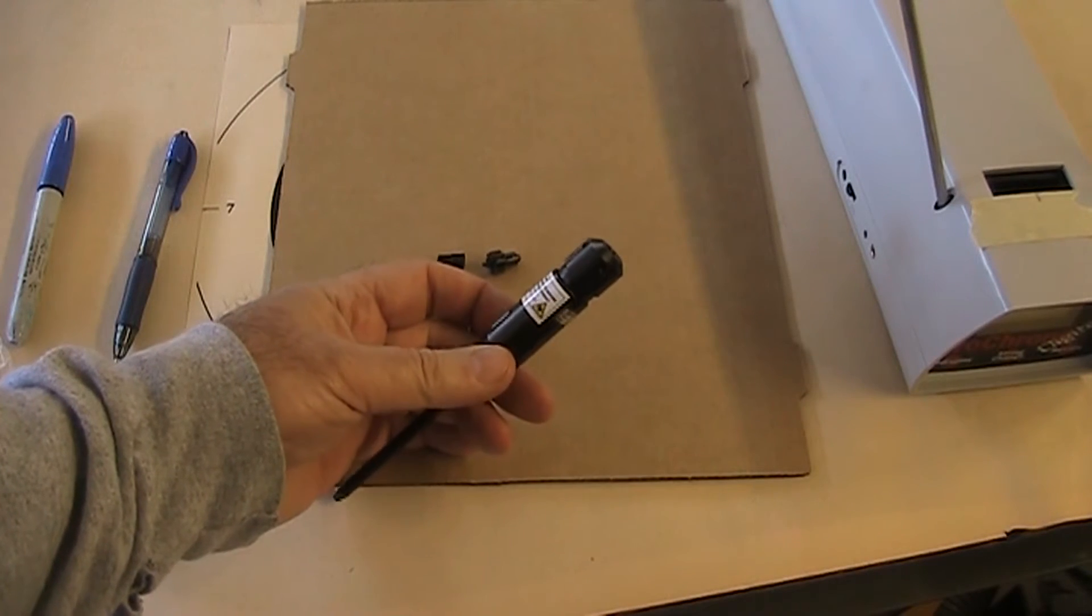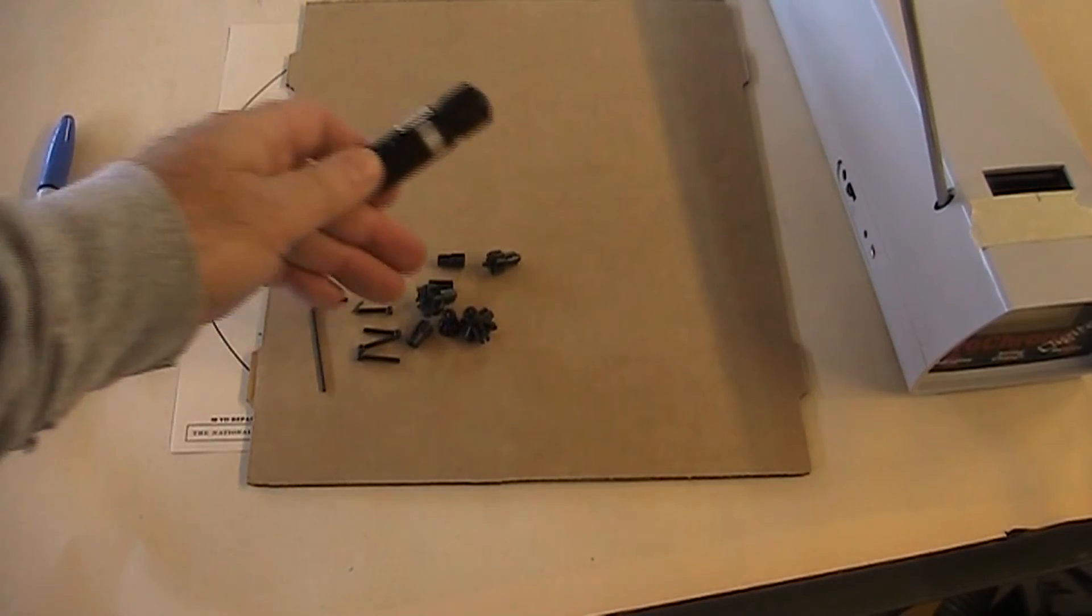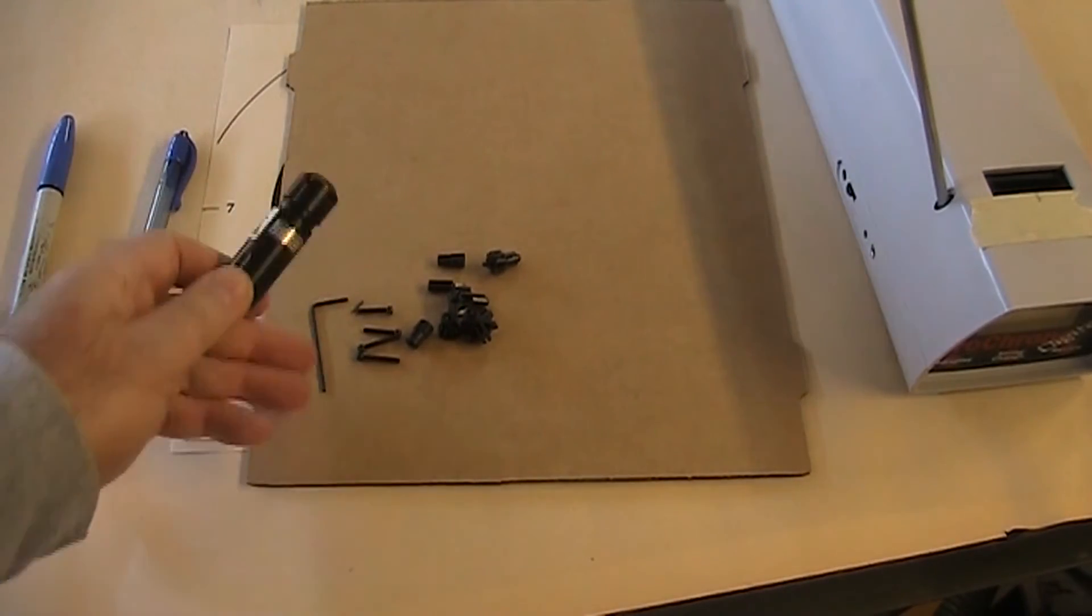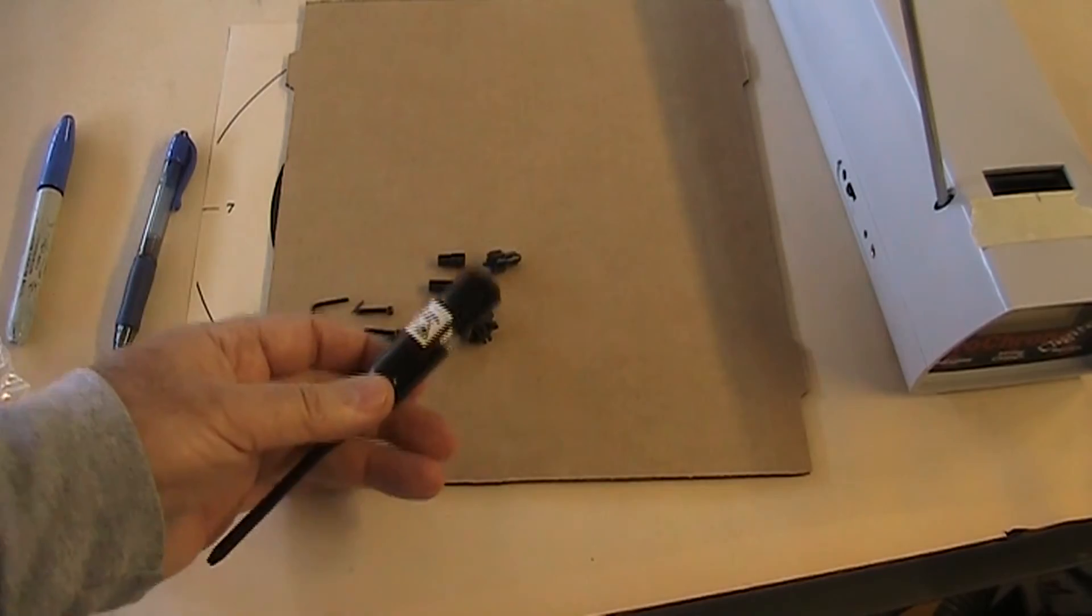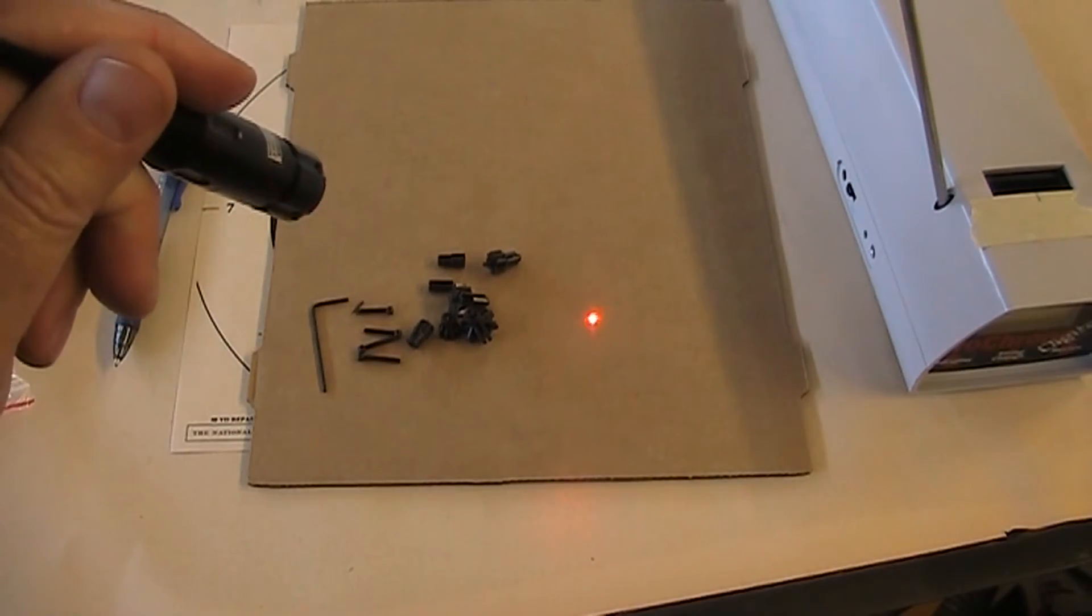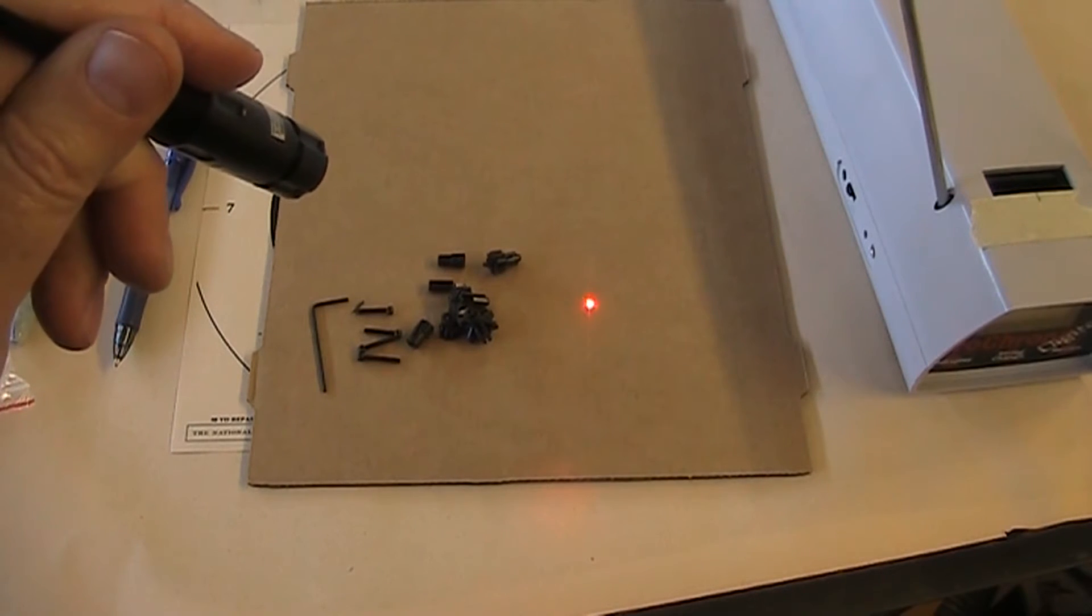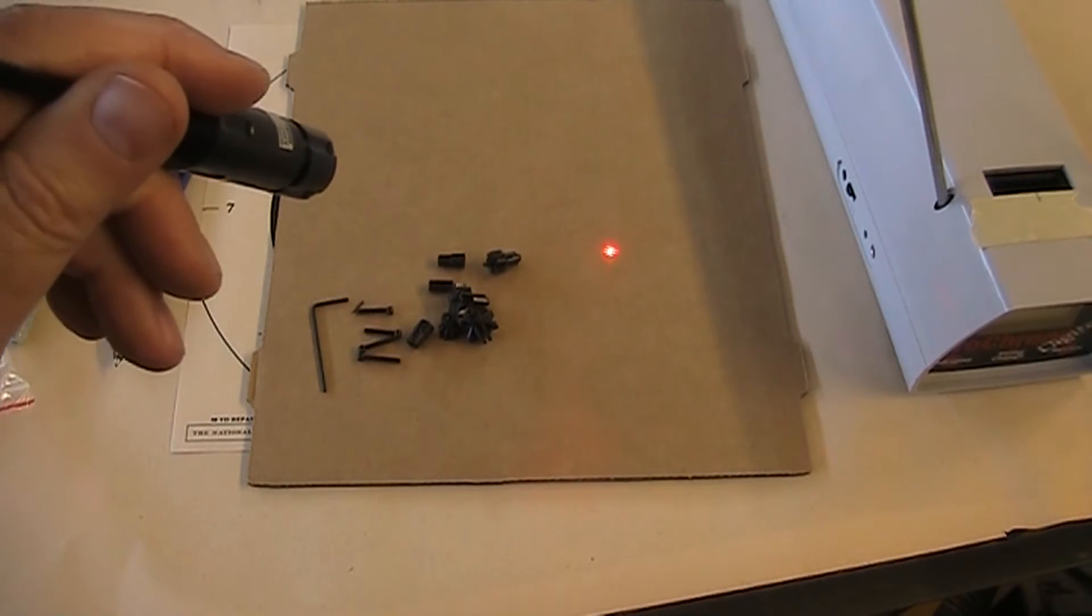I bought this laser bore sighter on Amazon.com for $13.88. It comes with adapters for up to .50 caliber and it's plenty bright to use on a chronograph that's only 10 to 15 feet away. And if it keeps you from shooting a hole in your chronograph, I think you'll consider it money well spent.